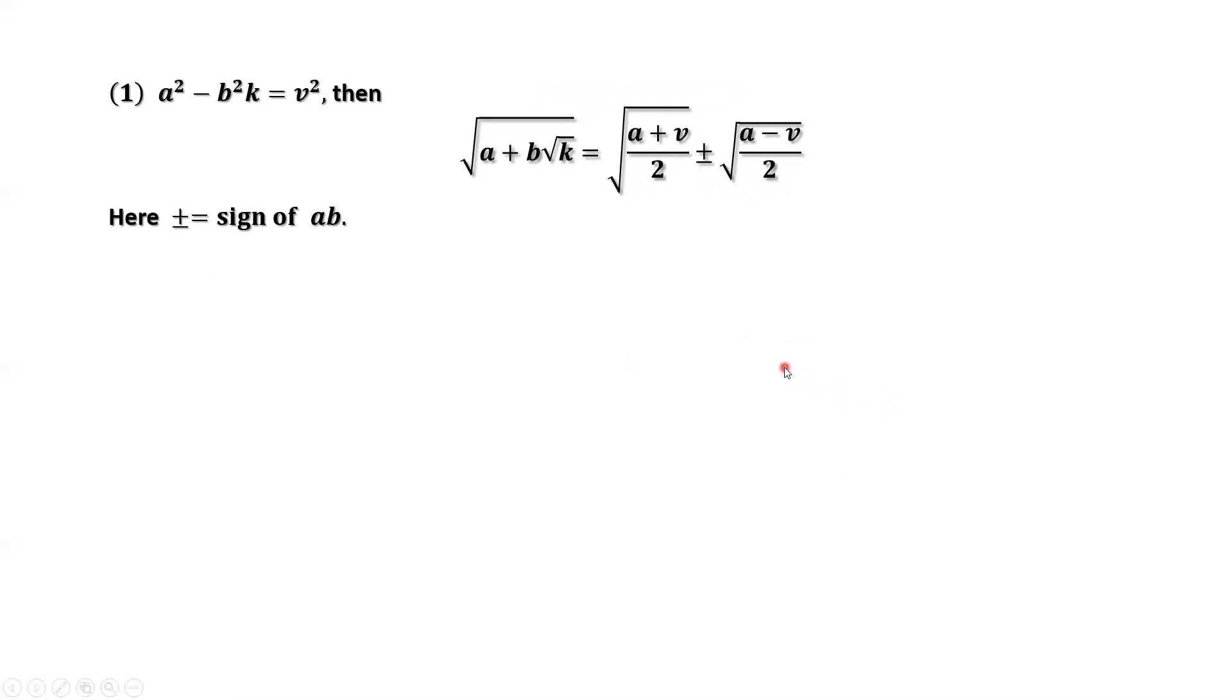Let's look at the first example. We want to simplify square root of 2 minus square root of 3. We can identify those parameters: a equals 2, b equals negative 1, and k equals 3.